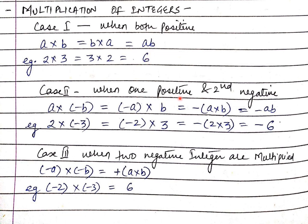Case 2: when one number is positive and the second is negative, the answer is negative. A into bracket minus B is the same as minus A into B, again by the property of commutativity. The answer is minus AB. For example, 2 into bracket minus 3 is the same as minus 2 into 3, and the answer is minus 6. Because 2 times 3 is 6, and there is only one negative sign, so the answer is negative.